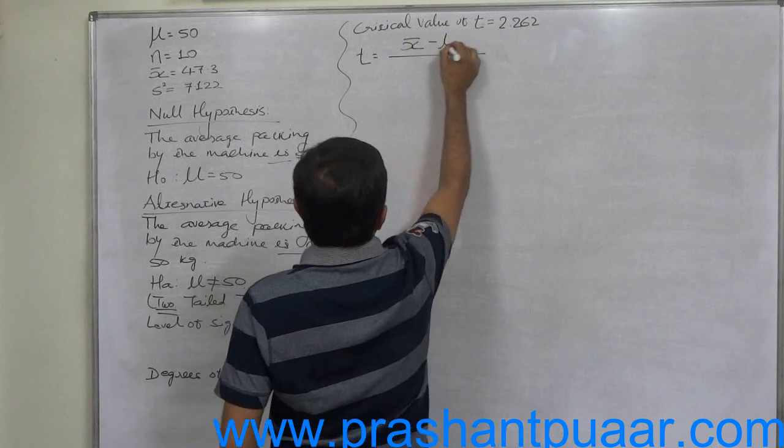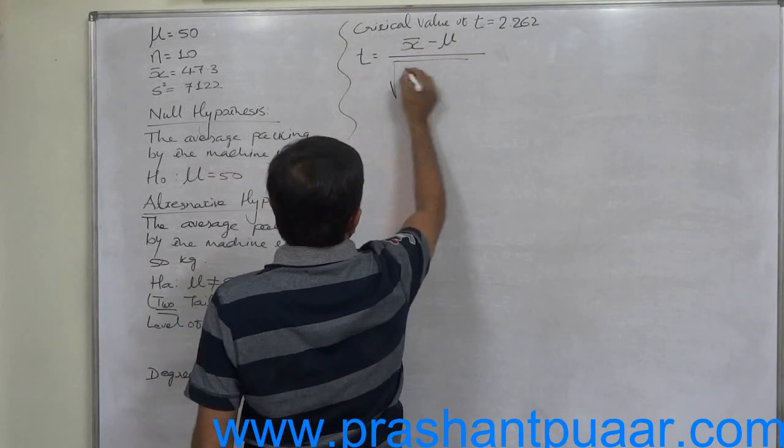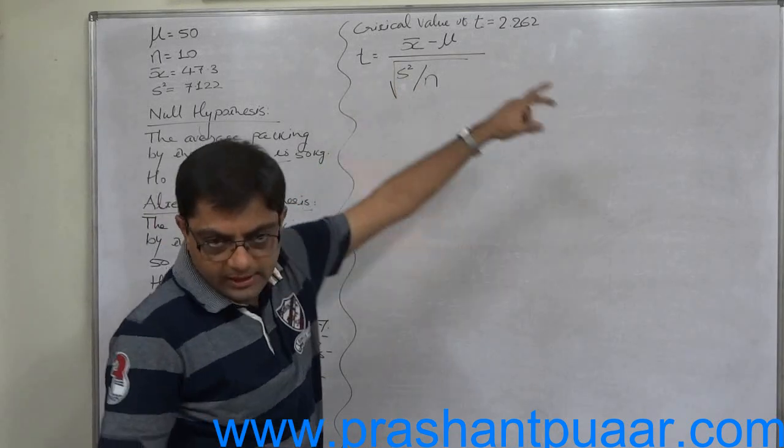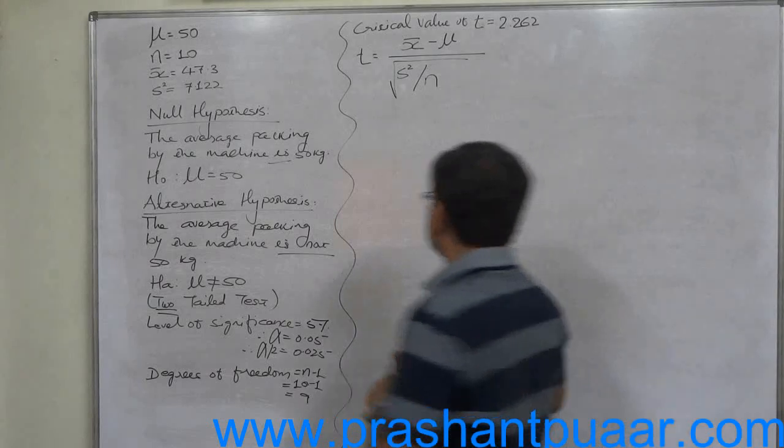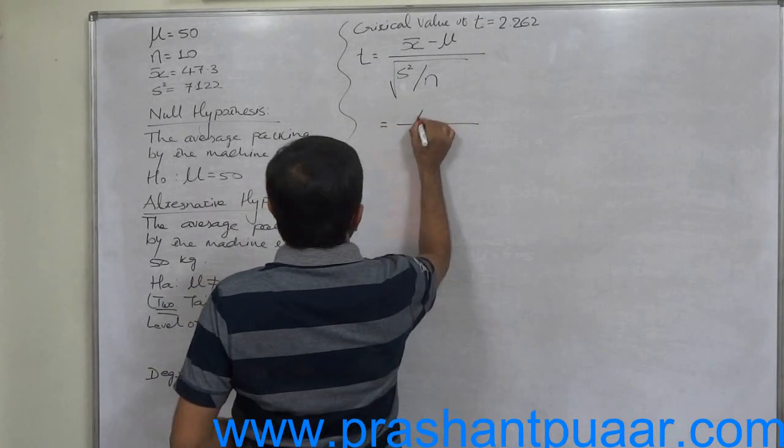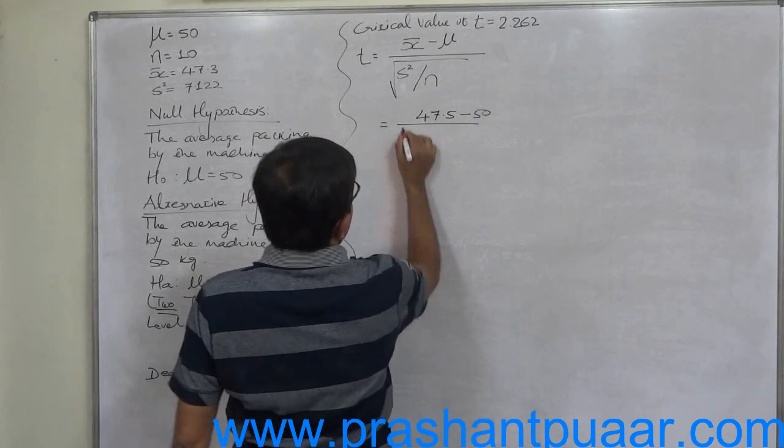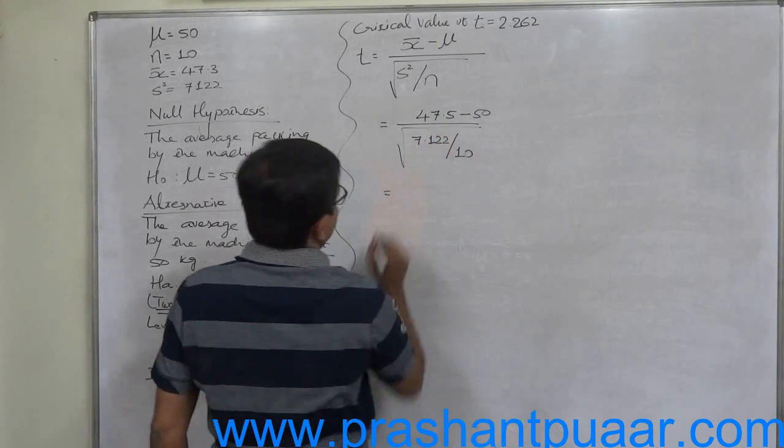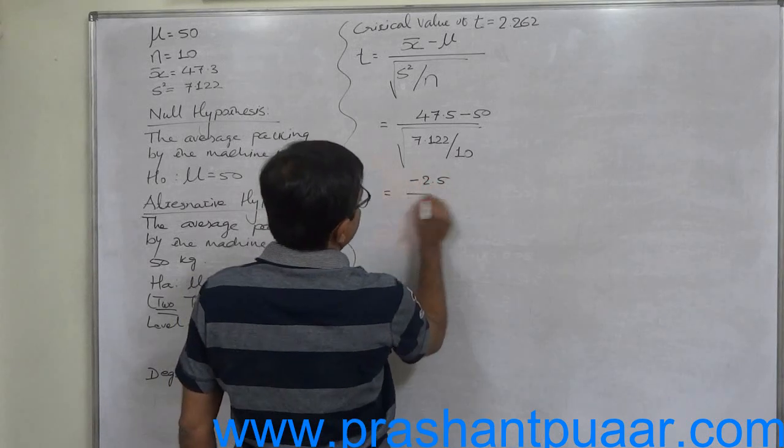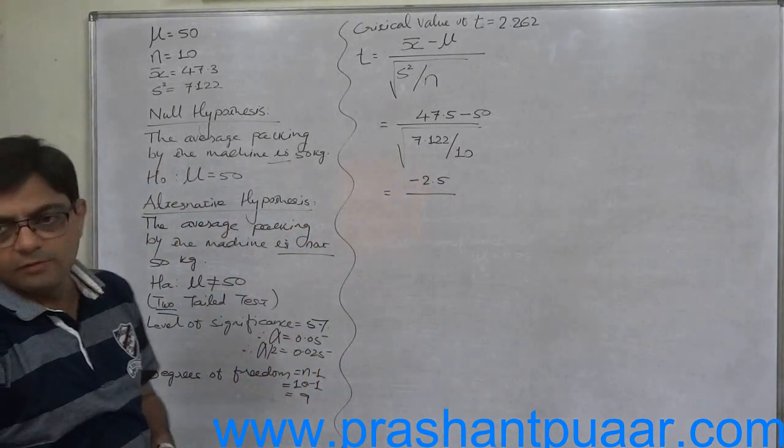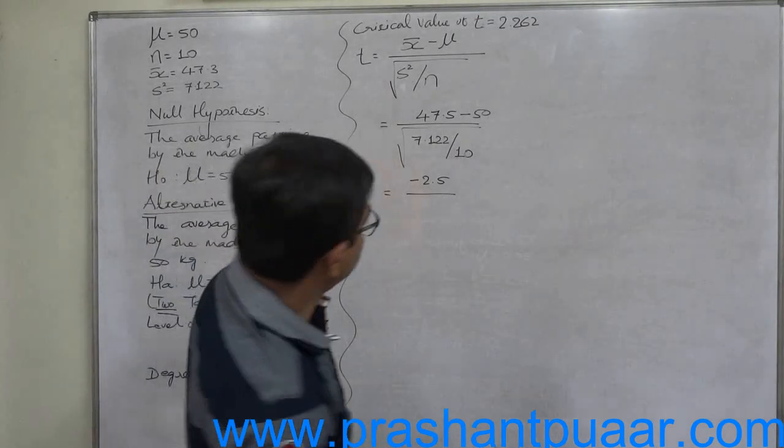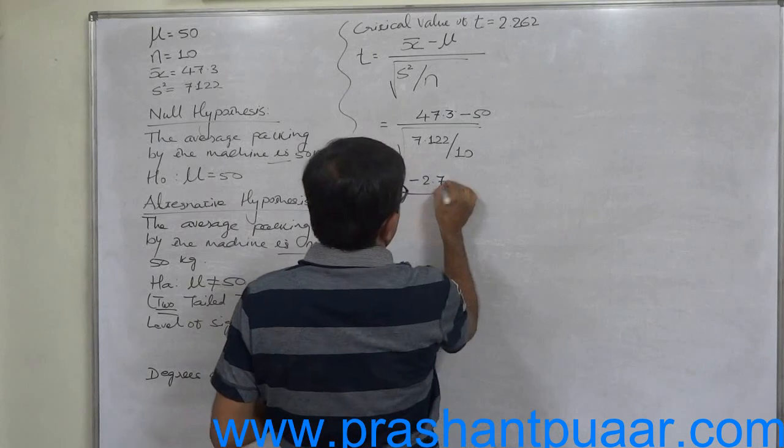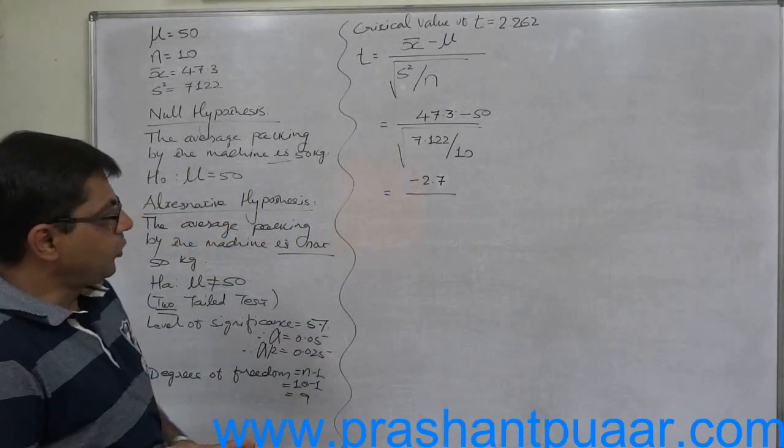Now we will calculate T in the same way: x-bar minus mu divided by square root of s² by n. See, we are taking s² instead of s, so the entire standard error is in the form of square root. 47.3 minus 50 divided by square root of 7.122 divided by 10. That's -2.7 divided by square root of 0.7122.